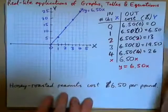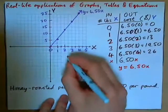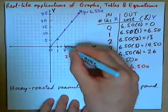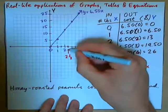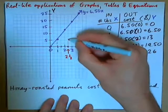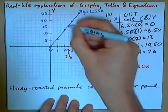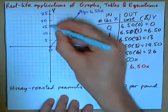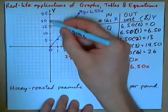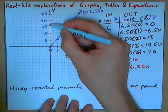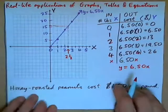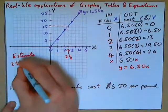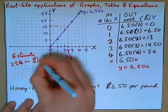We can use the graph to estimate costs. For example, how much would 2.5 pounds cost? Find 2.5 on the X axis — it's halfway between 2 and 3, right here. Go straight up to the graph, hit the graph, then go horizontally back. This is $15, this is $20, so that looks like about $16.